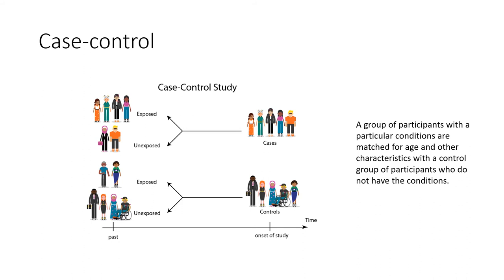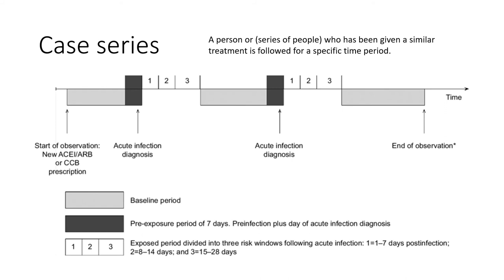For case-control studies, a group of participants with a particular condition are matched for age and other characteristics with a control group of participants who do not have the condition. For case series, a person or series of persons who have been given a similar treatment are followed for a specific time period — for example, across a baseline period, a pre-exposure period of seven days, and an exposed period divided into risk windows.